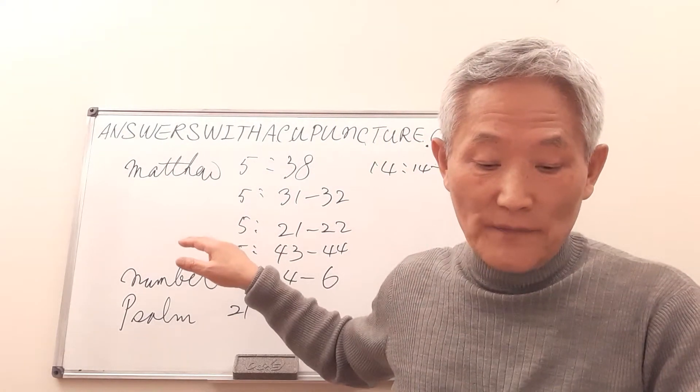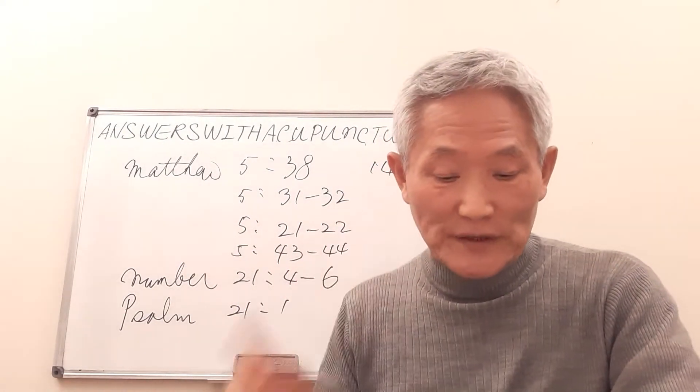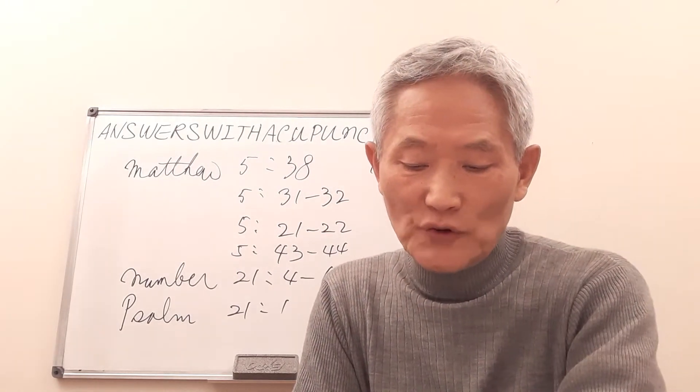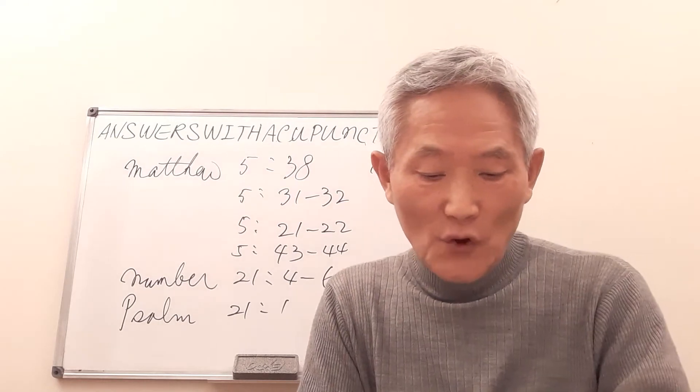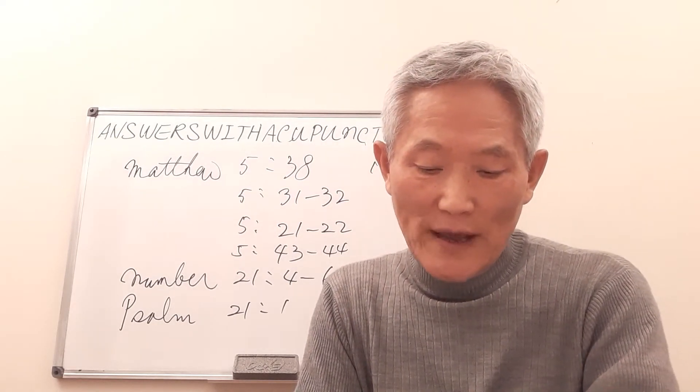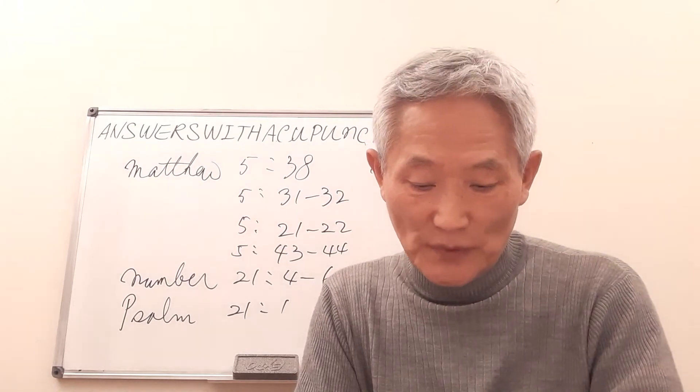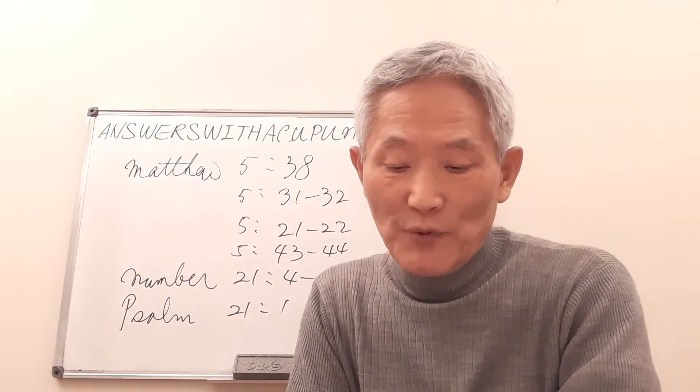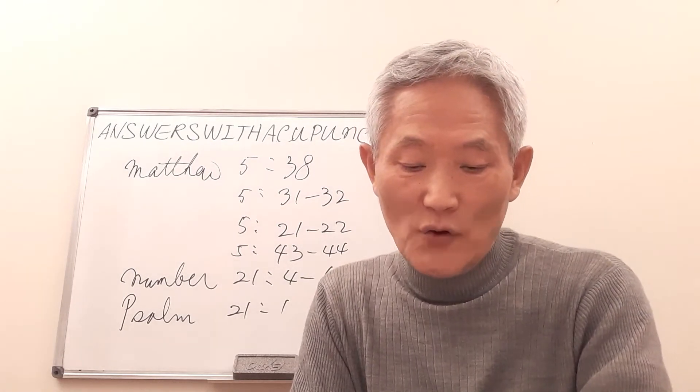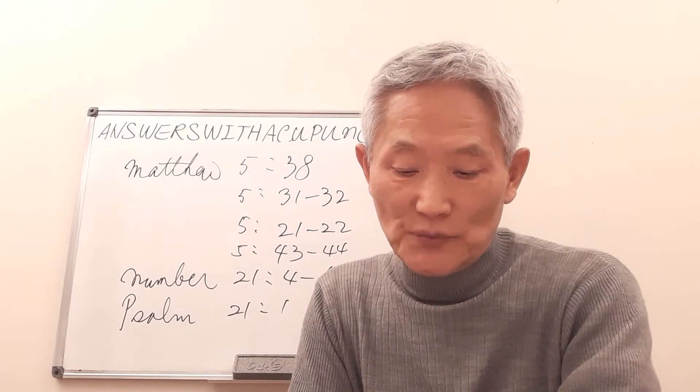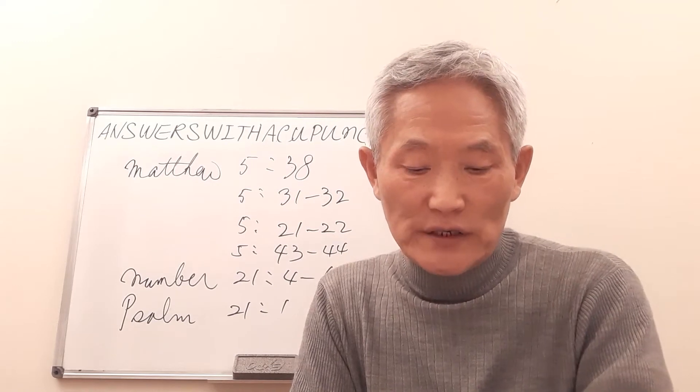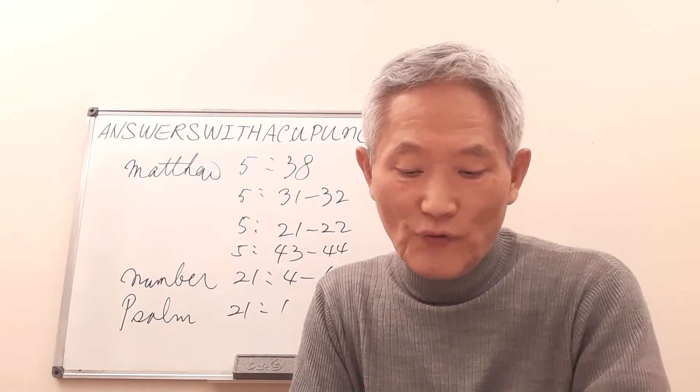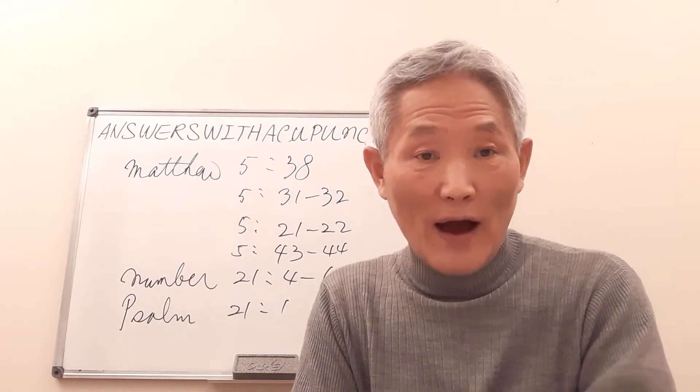Now on chapter 5 and verse 21, it also said: 'You have heard that it was said to those of old, You shall not murder, and whoever murders will be liable to judgment. But I say to you, that everyone who is angry with his brother will be liable to judgment. Whoever insults his brother will be liable to the counsel, and whoever says you fool will be liable to the hell of fire.'